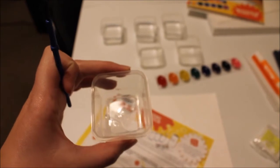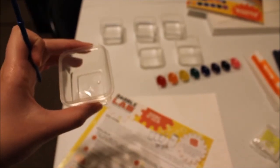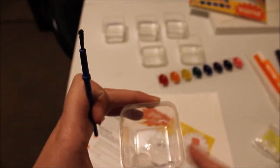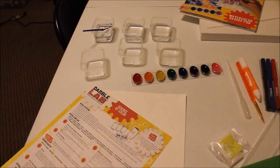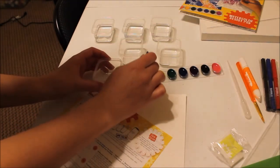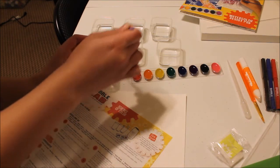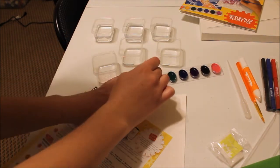If I'm understanding the directions, which there's a good chance I'm not, I went ahead and I put one-half teaspoon of water in each of these and then one-fourth teaspoon of salt. Then I guess I dab my paintbrush in the water, pick my color, and transfer it in there.